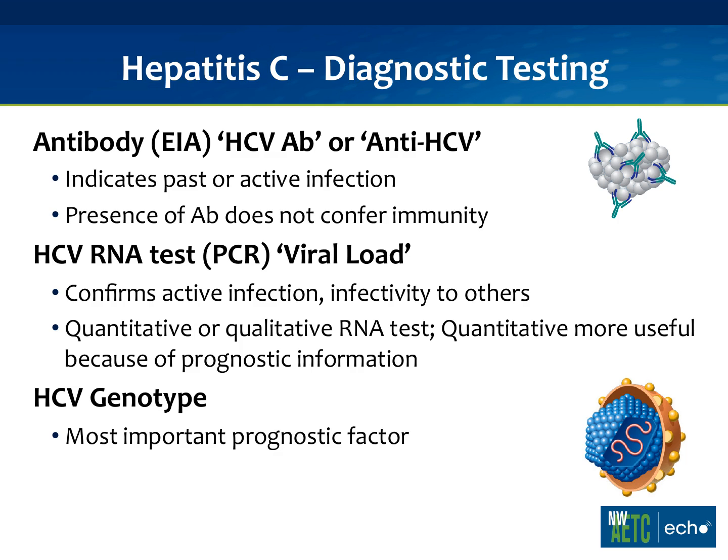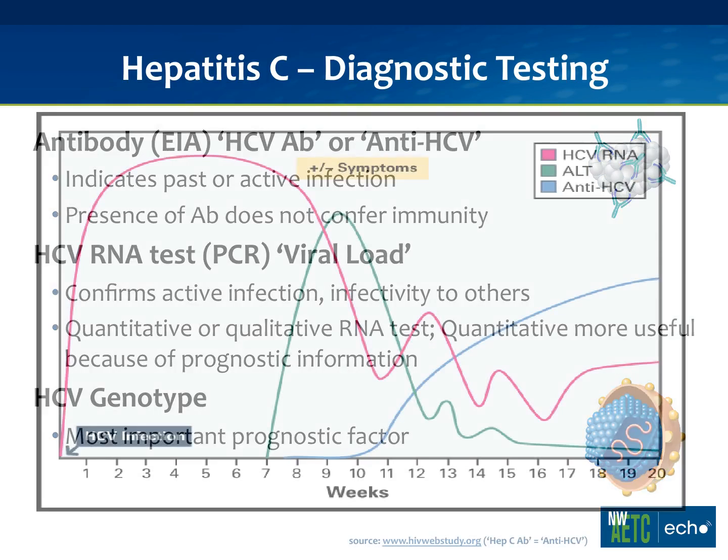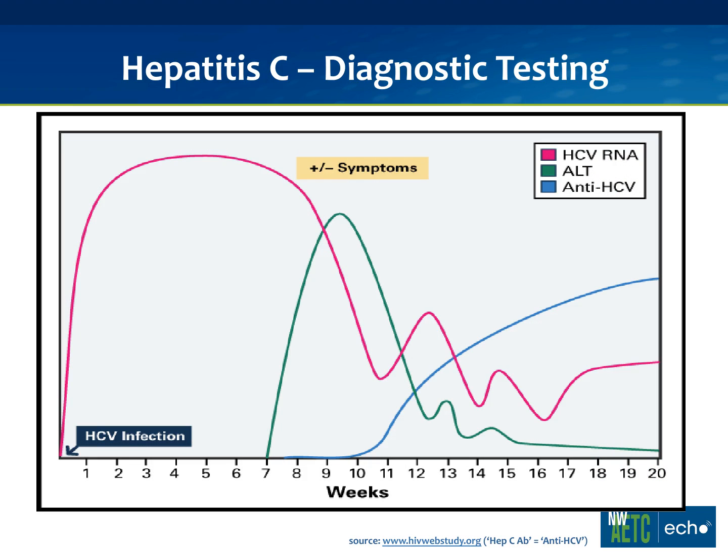The next test sometimes ordered is the genotype — a more expensive test that tells you how likely a patient is to respond to treatment. You don't necessarily need to do the genotype right away, only if you're considering treatment.